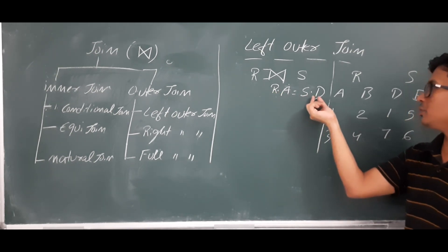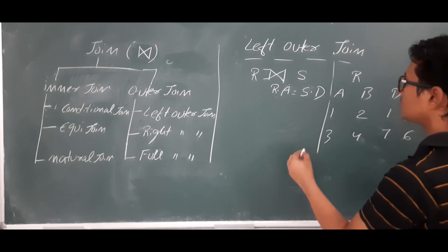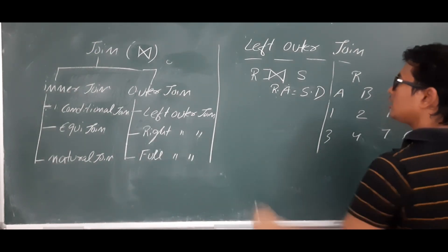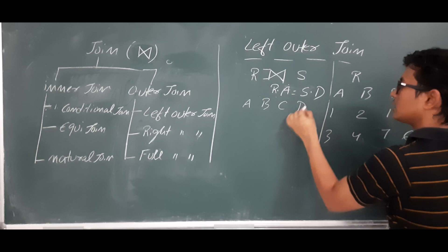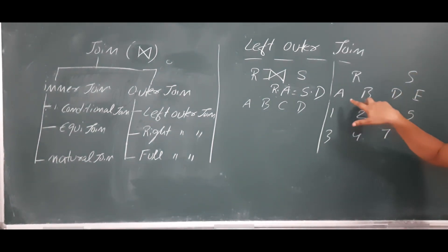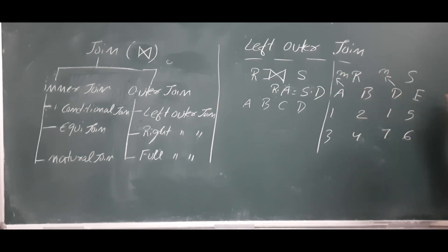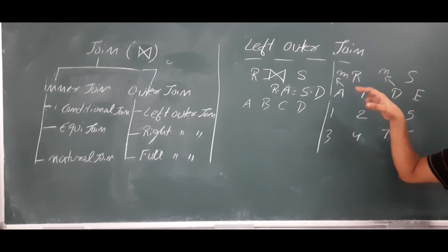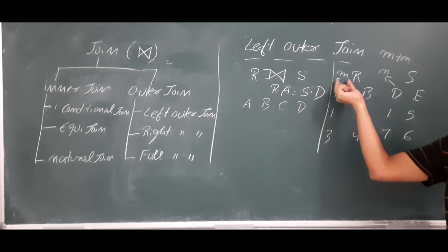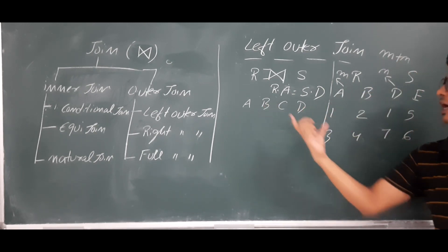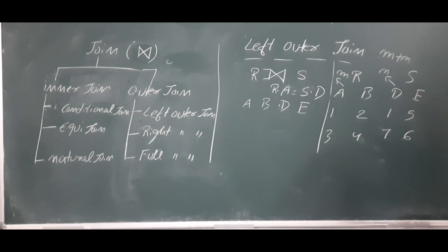To compute the left outer join, first apply the cartesian product. If you have m attributes in relation R and n attributes in relation S, then R cartesian product S will give degree m plus n. In this case it is two plus two, giving four attributes: A, B, D, E.